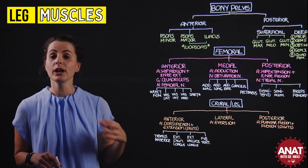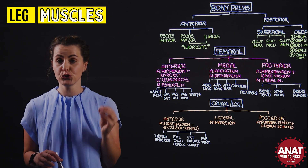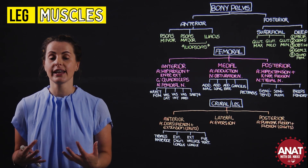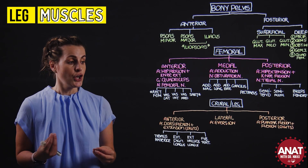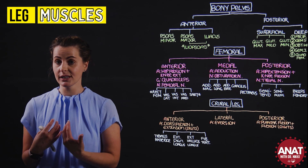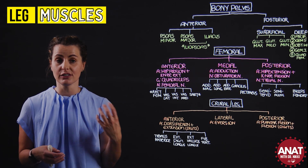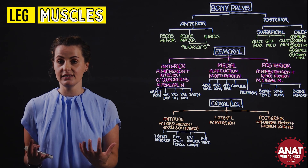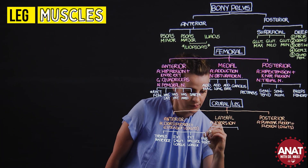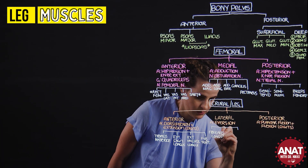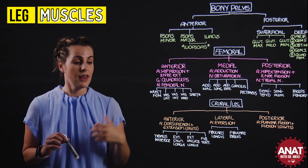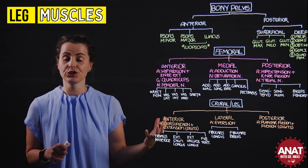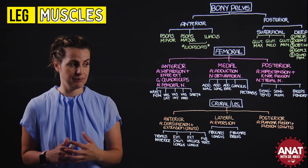In the lateral compartment we only have two muscles, both related to the fibula: fibularis longus and fibularis brevis. Their collective actions are eversion of the foot, and they can also produce plantar flexion.